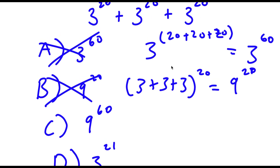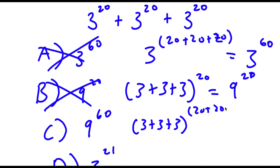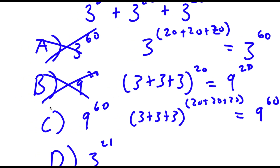For 9 to the power of 60, you do both of them — you add all the bases and you add all the exponents. So this results in 9 to the power of 60, and this method is also wrong.